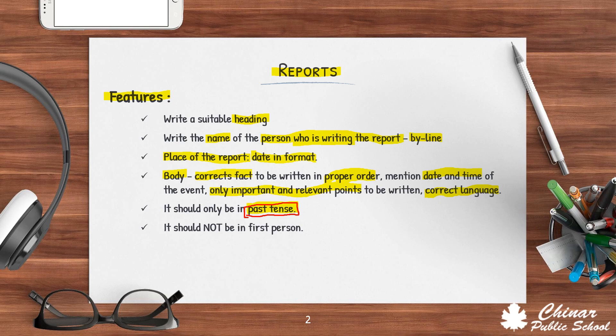Next, the report should not be in first person. You are writing a report — you need not mention that you were present there. It is not needed at all. Phrases like 'I was there,' 'I did it,' 'I was a part of it,' 'I danced,' 'I played' — nothing of this sort has to be written. You are a reporter writing about the program. So please be very careful: the whole thing has to be in past tense and not written in first person.